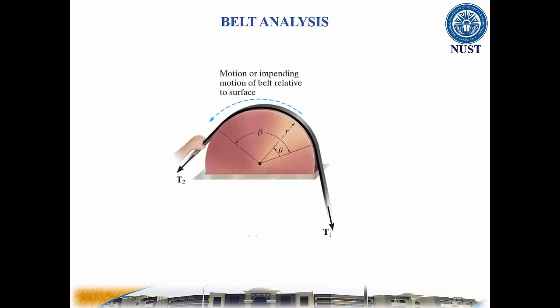Consider a flat belt passing over a fixed curved surface with the total angle of contact equal to beta radians. If the belt slips or is just about to slip, then T2 must be larger than T1 and the motion-resisting friction forces.